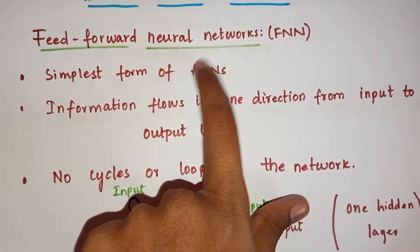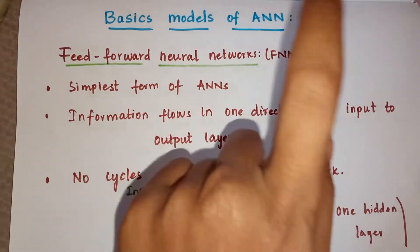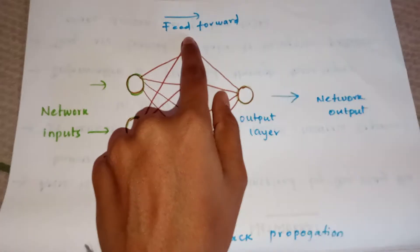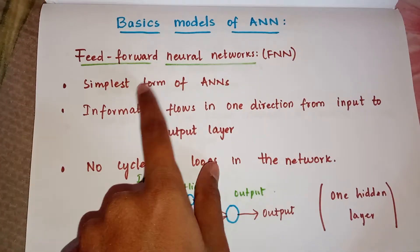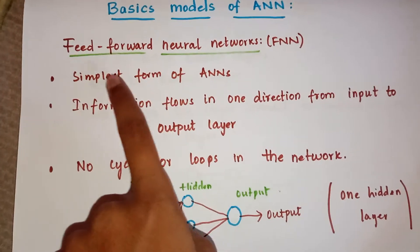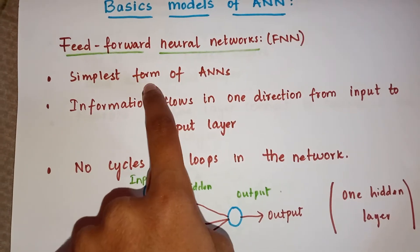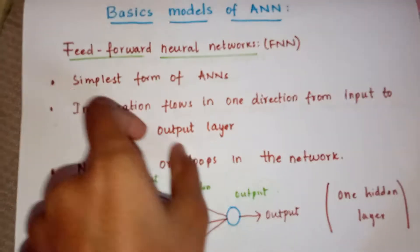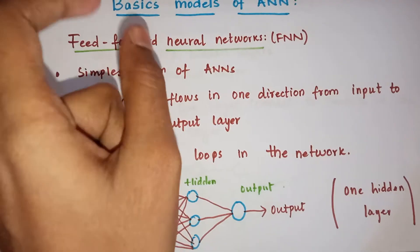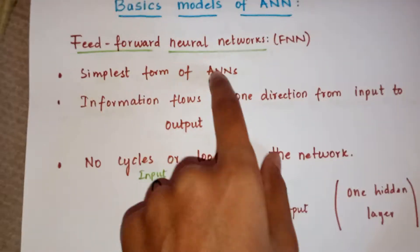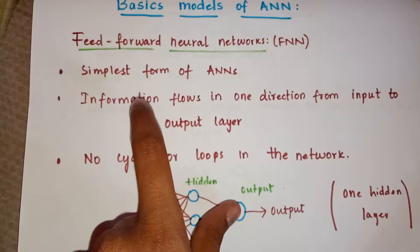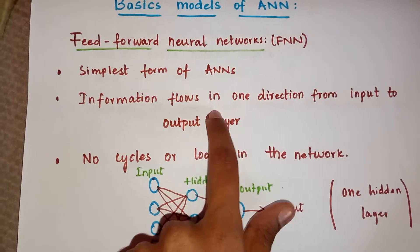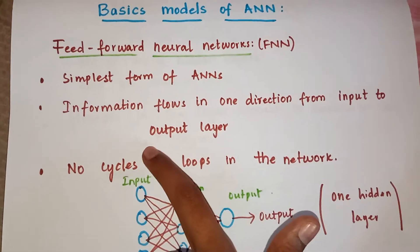First we will see what is the feed forward neural network. Remember in the previous video I showed you this diagram and there was this feed forward — now we are going to elaborate on it and learn what exactly it is. It is nothing but the simplest form of ANN, the basic first form of the neural network. In this, the information flows in one direction from the input to the output layer.